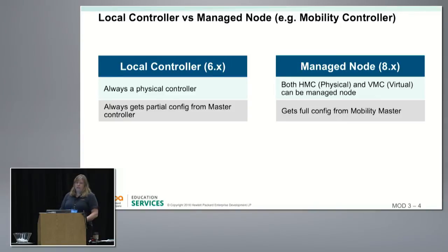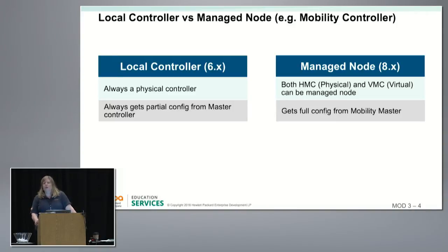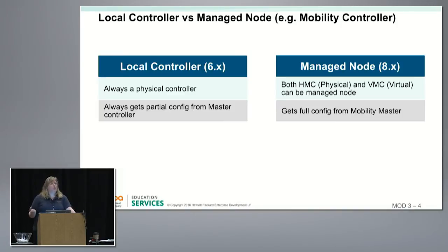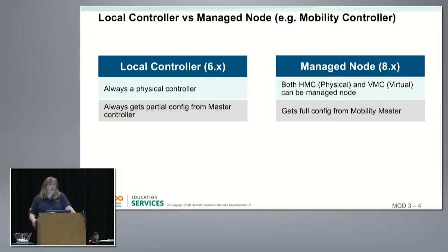The new term for the local controller concept in 8.x is Managed Node, abbreviated MN. This gets confusing because we have Mobility Master which is MM and Managed Node which is MN — it's a very slight difference. The local controller that terminates all user traffic — which in 6.x always had to be on a physical controller — in 8.x can be an HMC, a hardware mobility controller physical appliance, or it can be virtualized in a VMC.